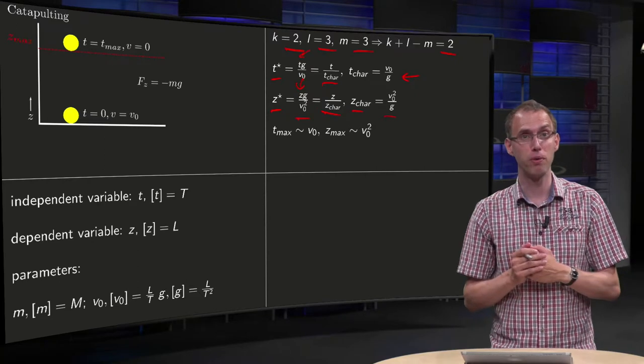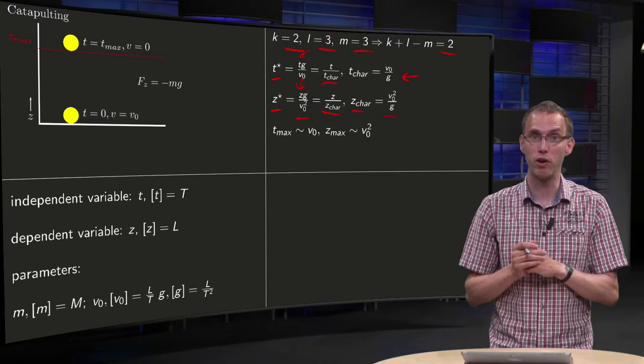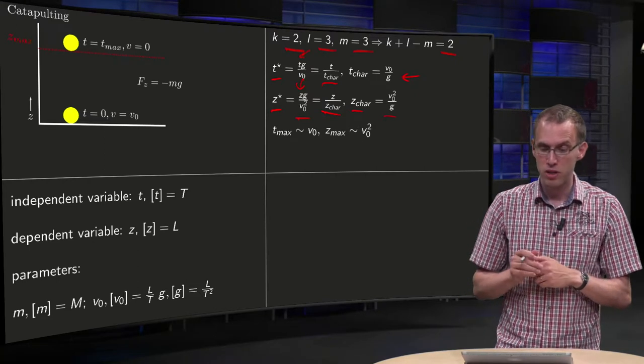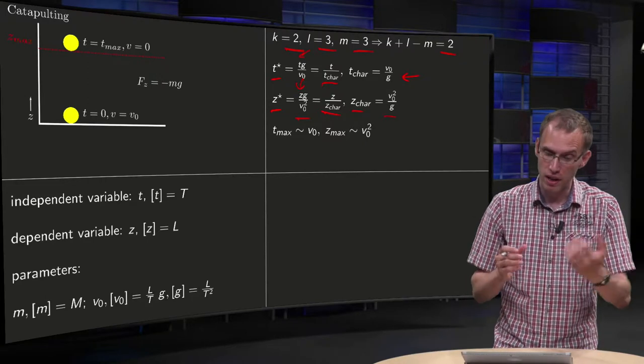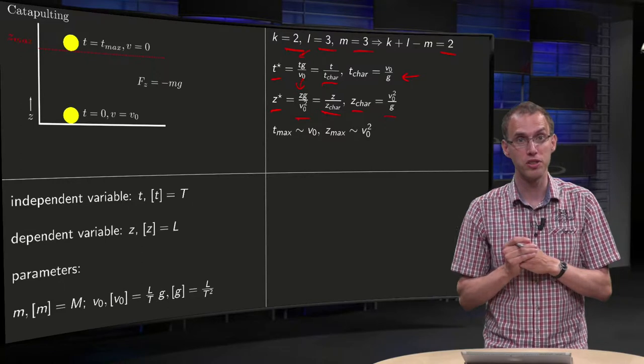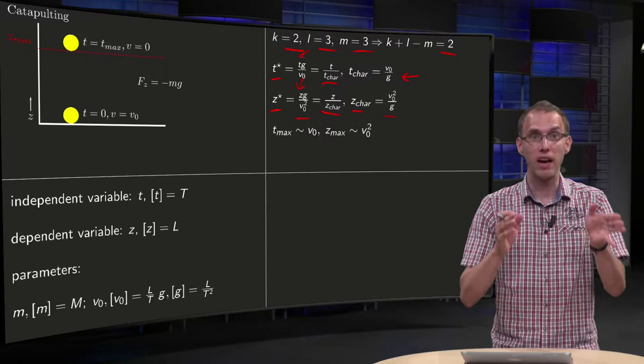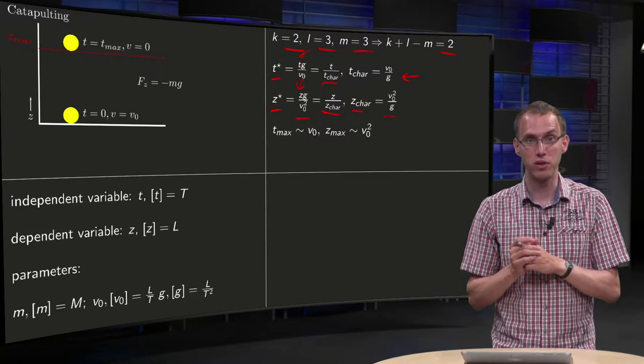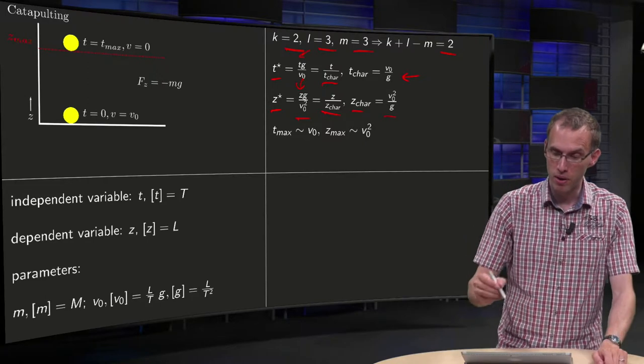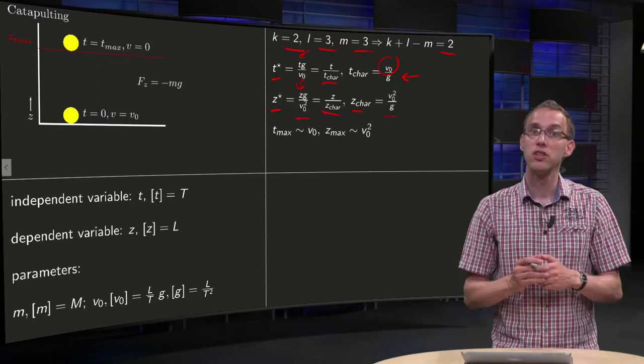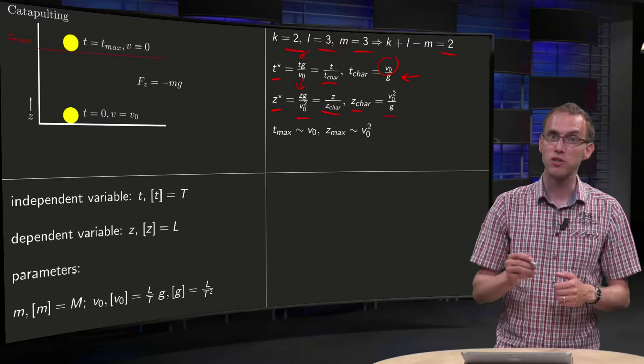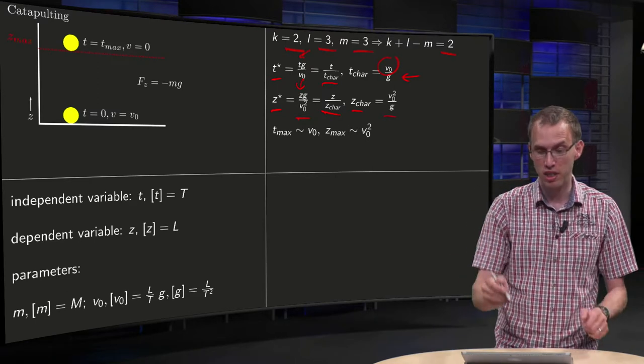If you solve your problem, your z* and t* will be of order 1. And you get your original t back by multiplying your t* with your characteristic time. Now your characteristic time behaves like v0, so what you see is that your t_max also will scale like v0.